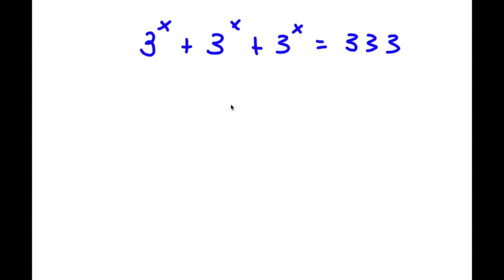All right guys, in this problem I have 3 to the power of x plus 3 to the power of x plus 3 to the power of x is equal to 333. So to solve this, what I'm first going to do is factor out 3 to the power of x from my left-hand side.